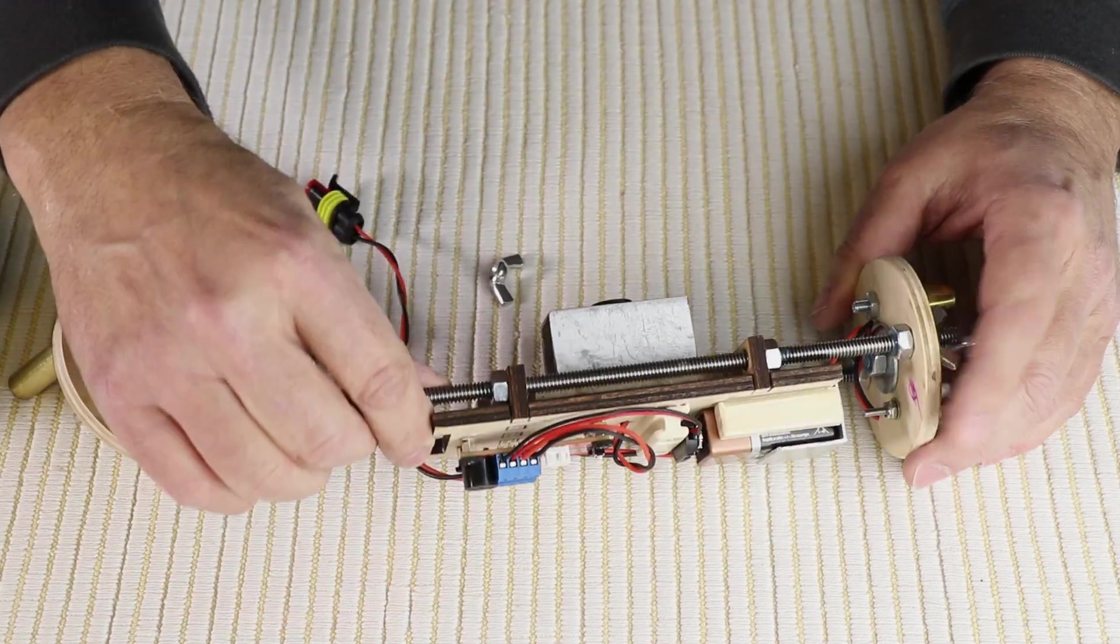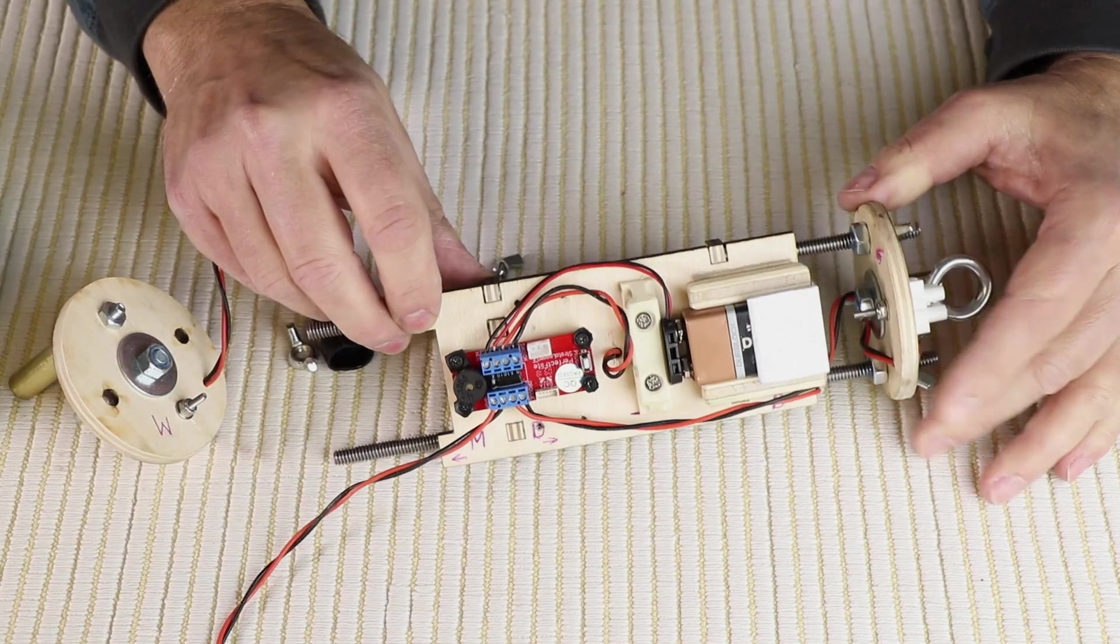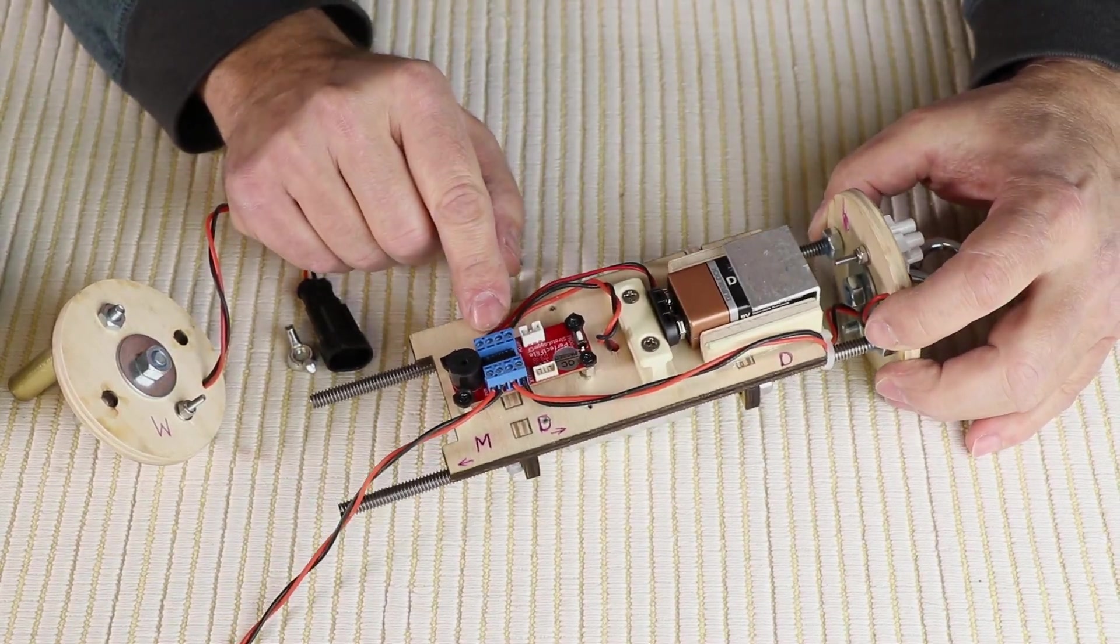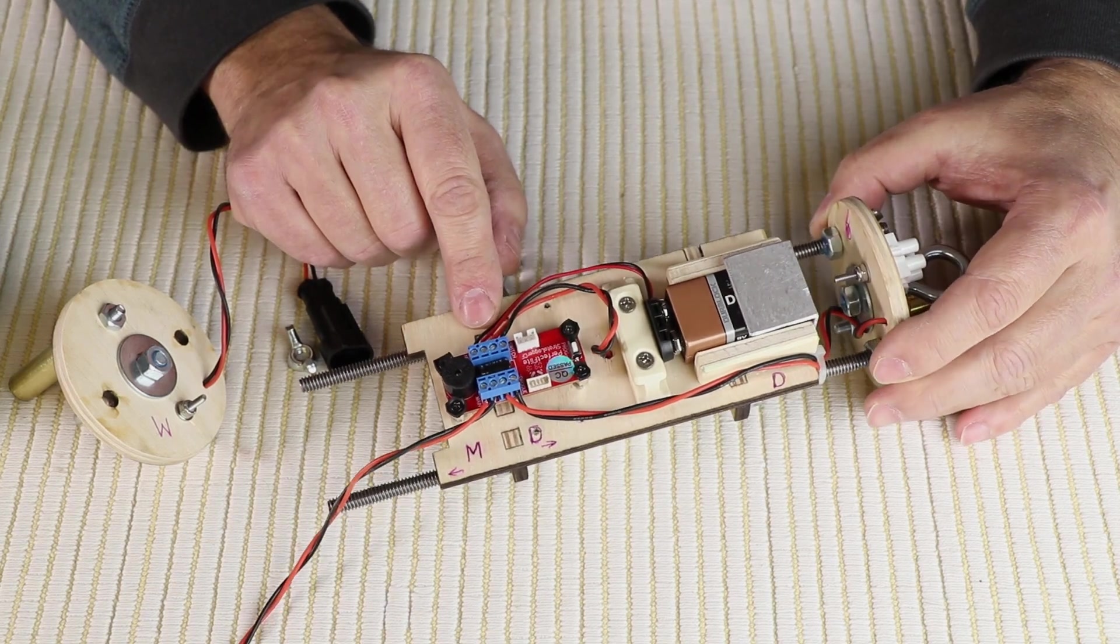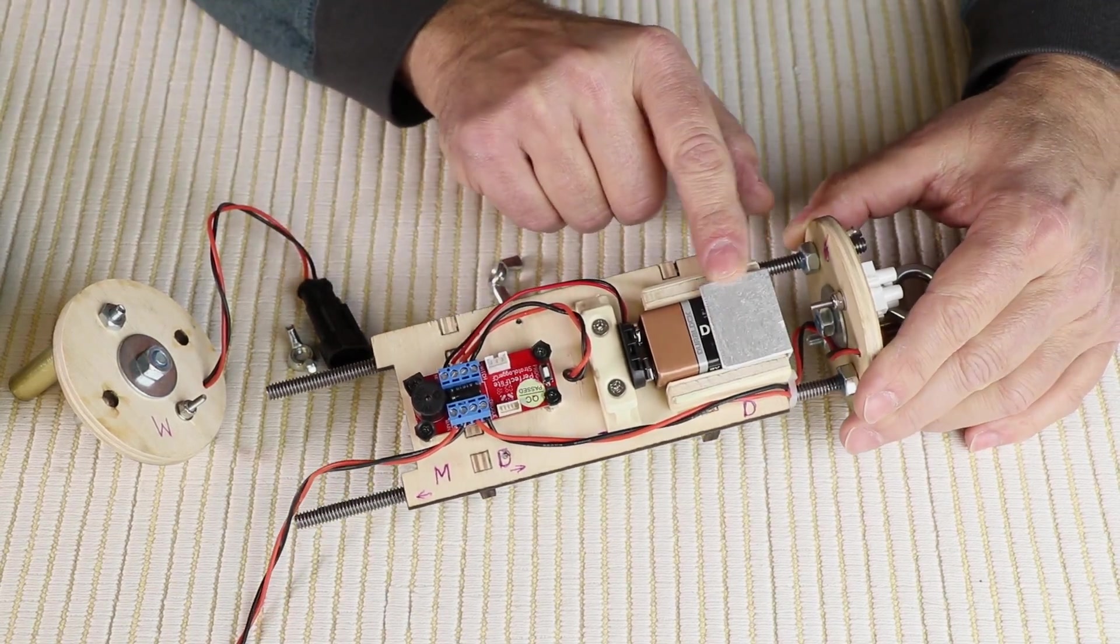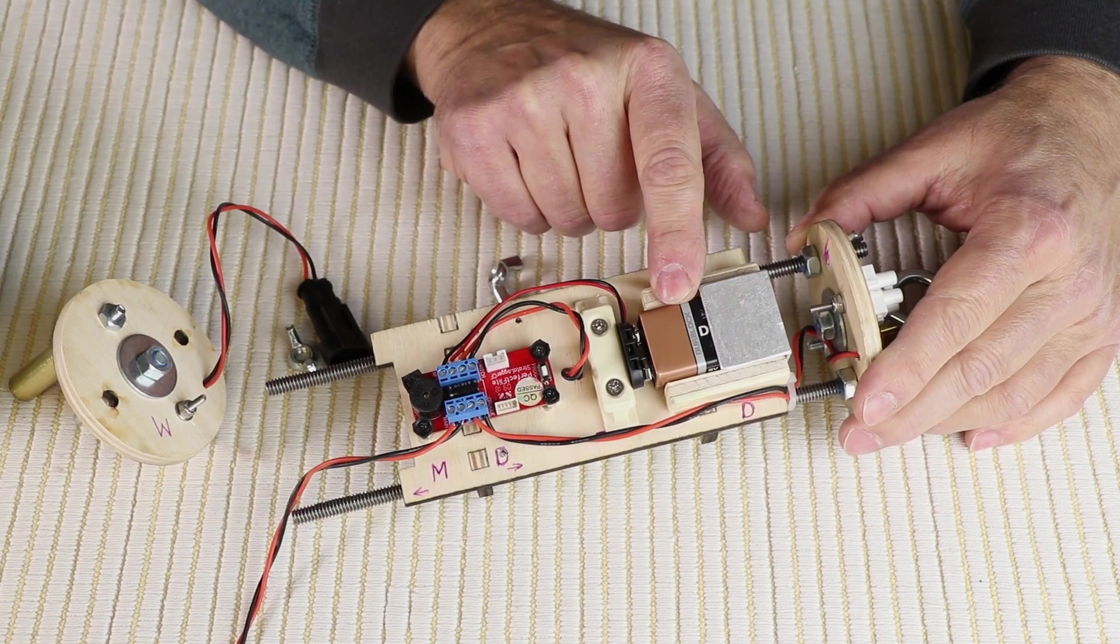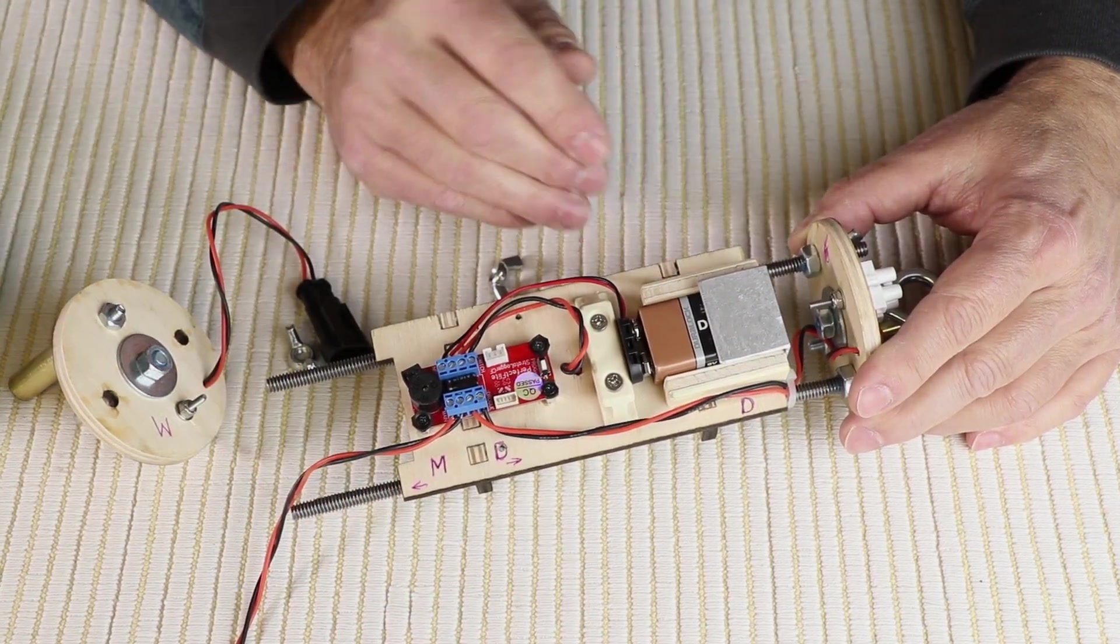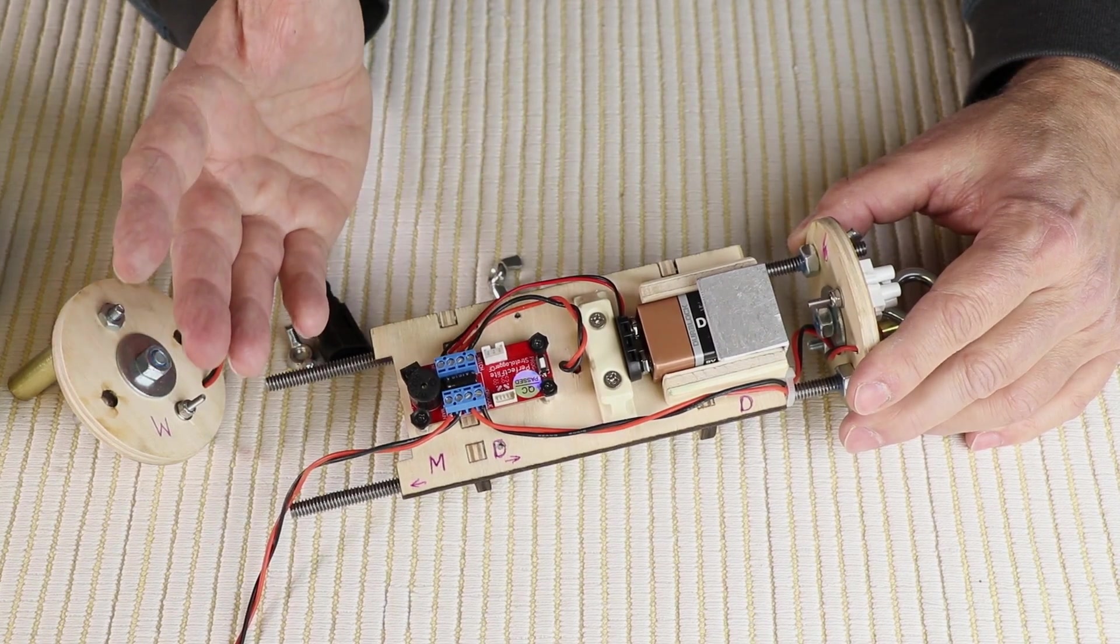Now turning the sled over, you can see my Perfect Flight Stratologger here mounted on the sled. I made a bracket here to contain the nine volt battery. Also I've contained it here on both sides to make sure that the battery doesn't move around or slip in any way.